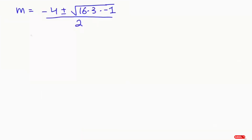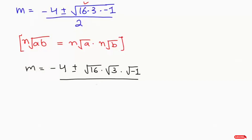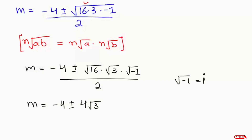Here I'm going to apply the radical rule: the nth root of a times b can be written as the nth root of a times the nth root of b. So I write this in separate roots: m equals minus 4 plus or minus root of 16 times root of 3 times root of negative 1 over 2. Root of 16 is 4, root of 3 stays, and root of negative 1 always equals iota, the imaginary number. So I write iota over 2.